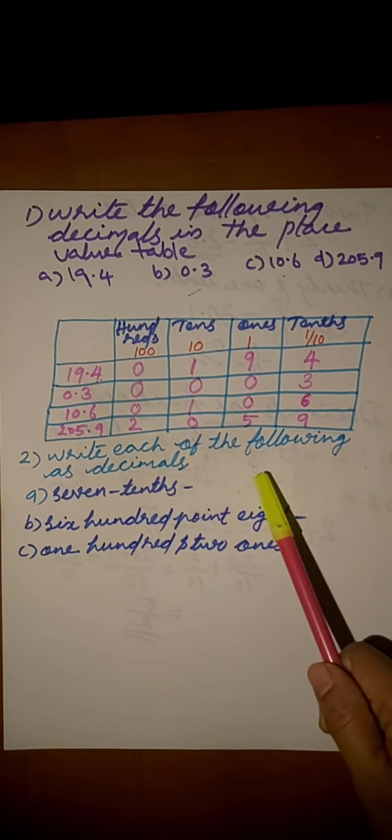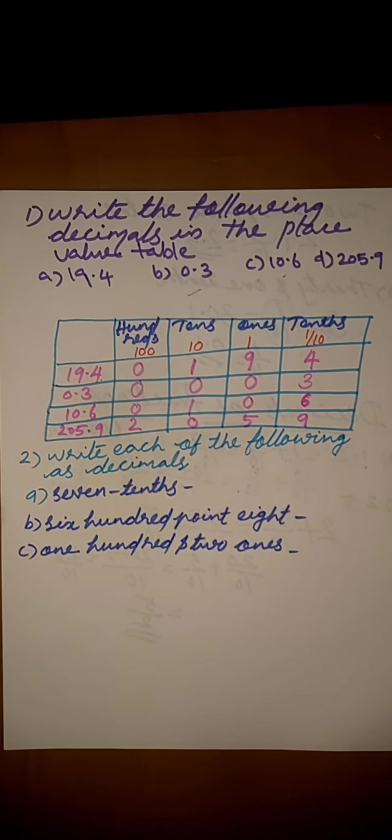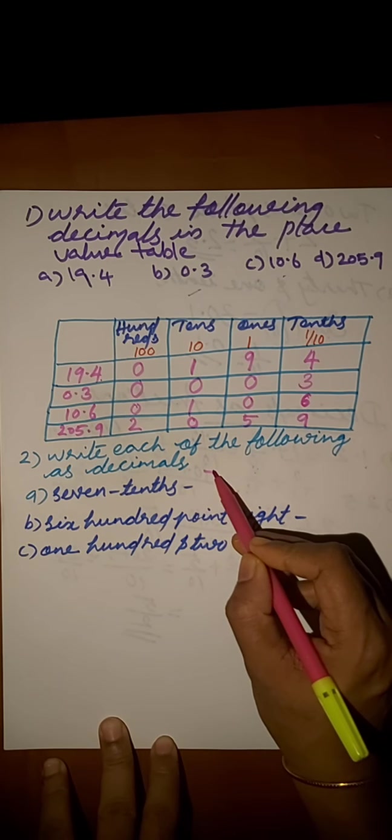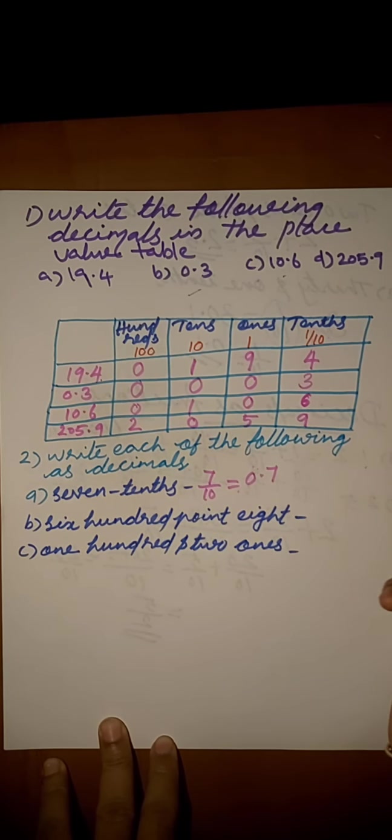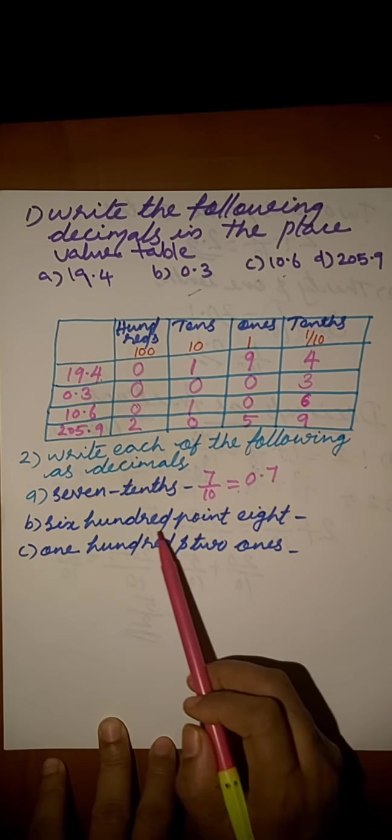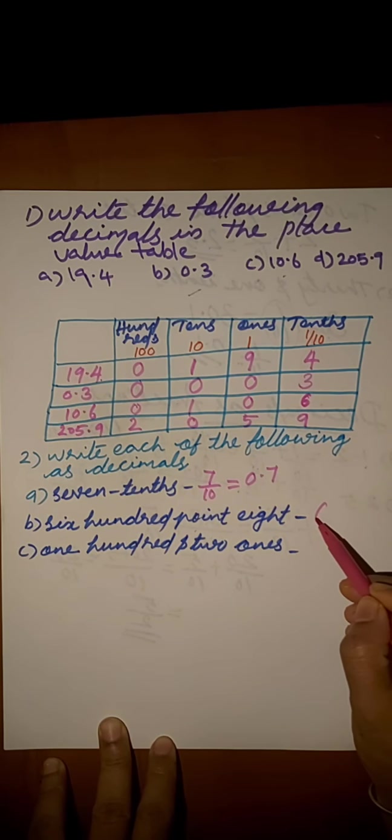Next question. Write each of the following as decimals. 7 tenths. As we write, 7 tenths is 7 by 10 which is equal to 0.7. Next question, 600.8, we write as 600.8.